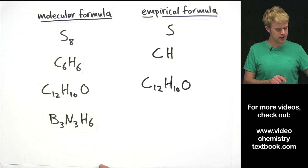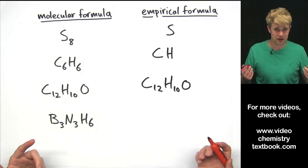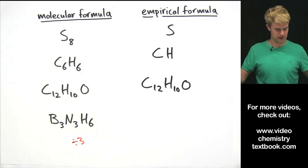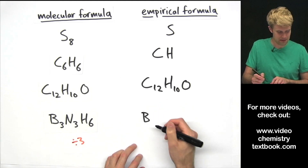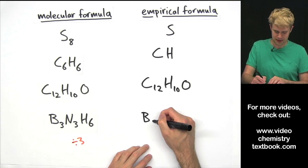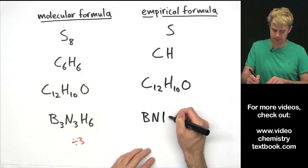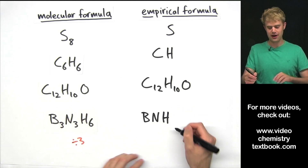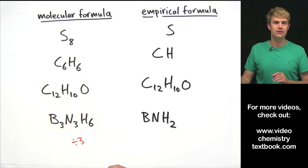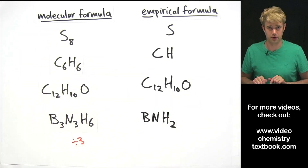Here's the last one: B3N3H6. What can we divide everything by? We can divide everything by 3, so we get B, 3 divided by 3 is 1 so we don't put anything; N, 3 divided by 3 is 1 so we don't put anything; and H, 6 divided by 3 is 2. So the empirical formula is BNH2. That's how we can take molecular formulas and write empirical formulas for them.